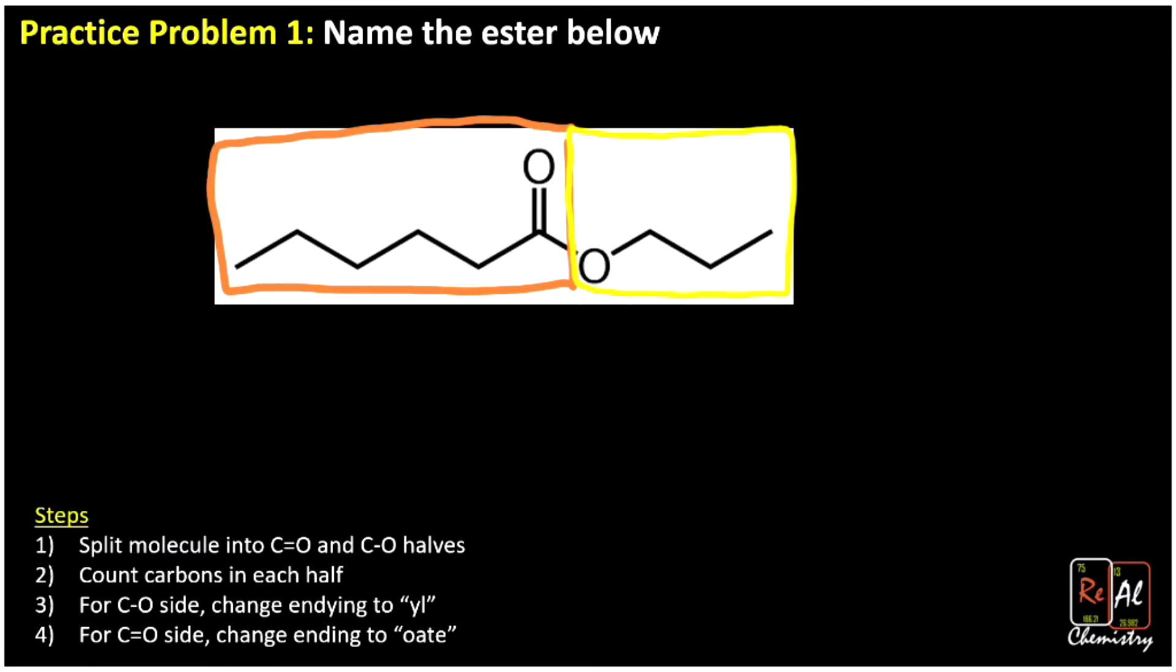We're going to count the carbons in each side. On the left-hand side, we got 1, 2, 3, 4, 5, 6. So 6 would give us a hexane.